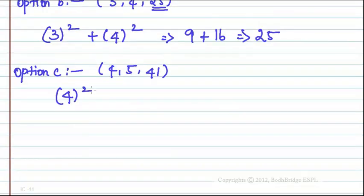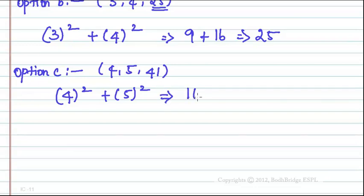Option C: 4, 5, 41. We write this as 4 squared plus 5 squared. 4 squared is 16, plus 5 squared is 25. Adding both gives 41 — that is the third term.